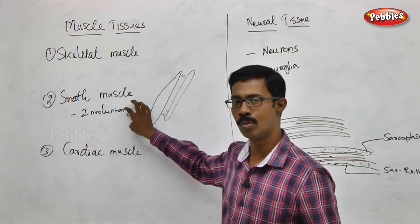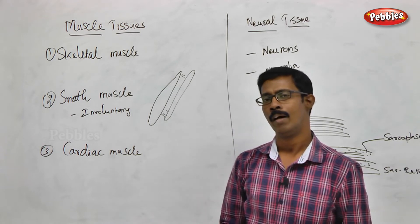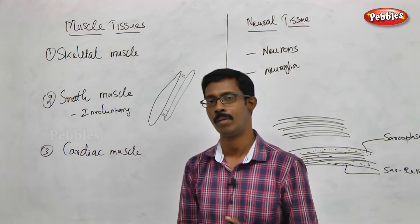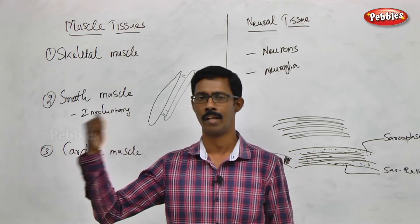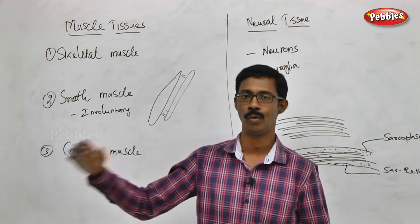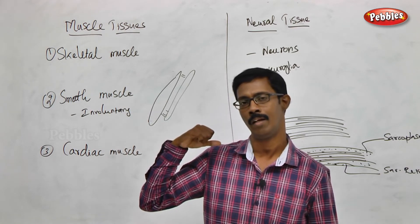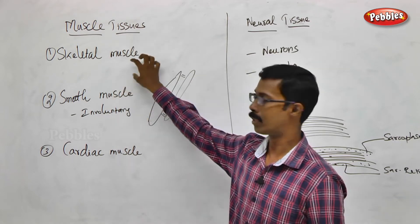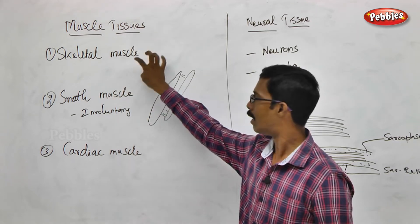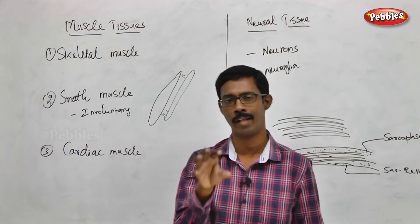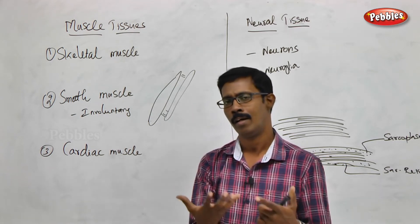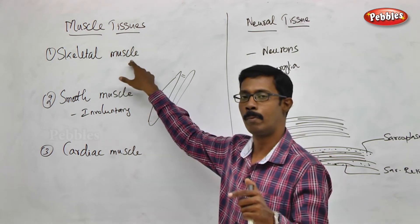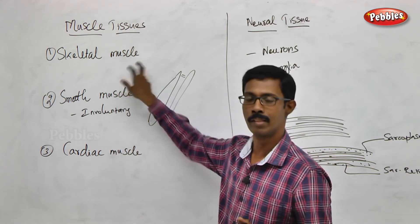There is a major difference between skeletal muscles and smooth muscles. By thinking — that is, by voluntary control — we can control the skeletal muscles. For example, I can fold and unfold my hand. We can voluntarily perform a particular function. That is what we can do with skeletal muscles.